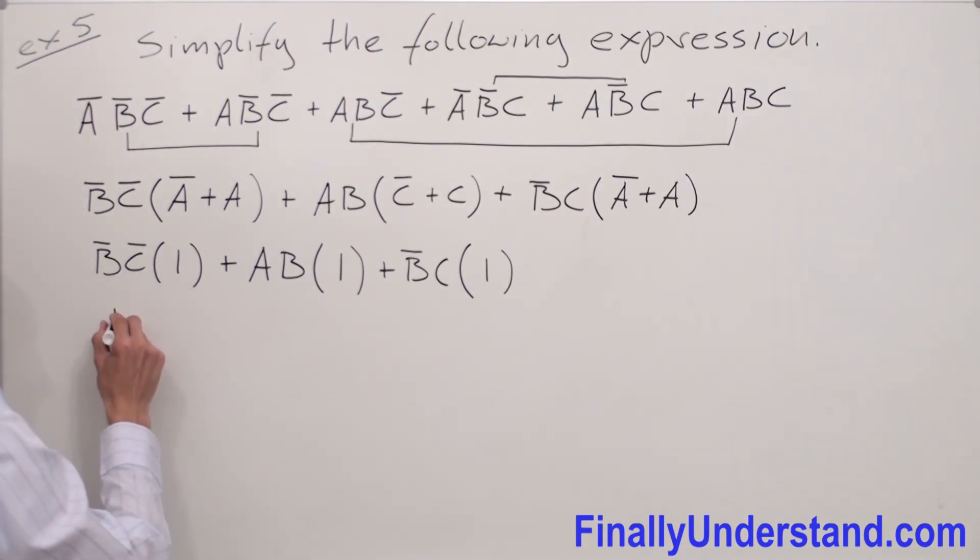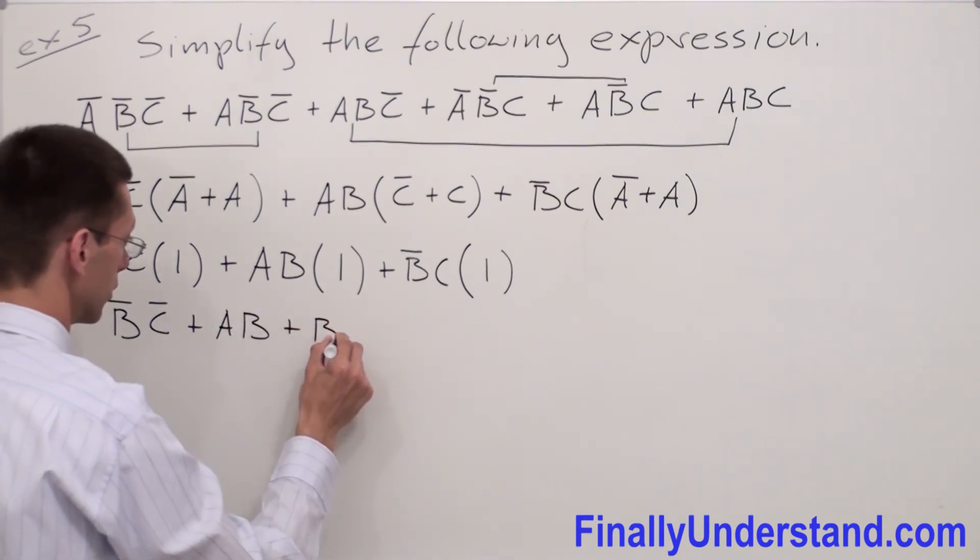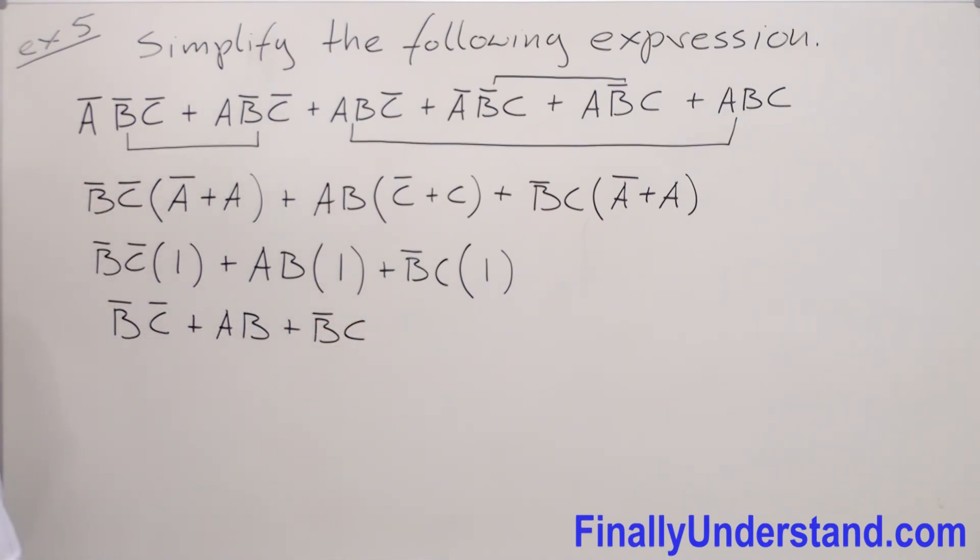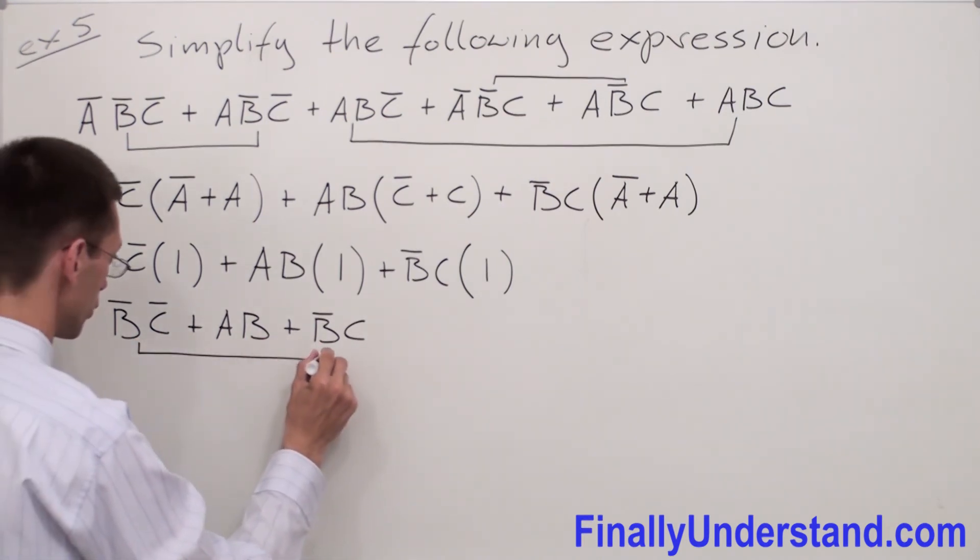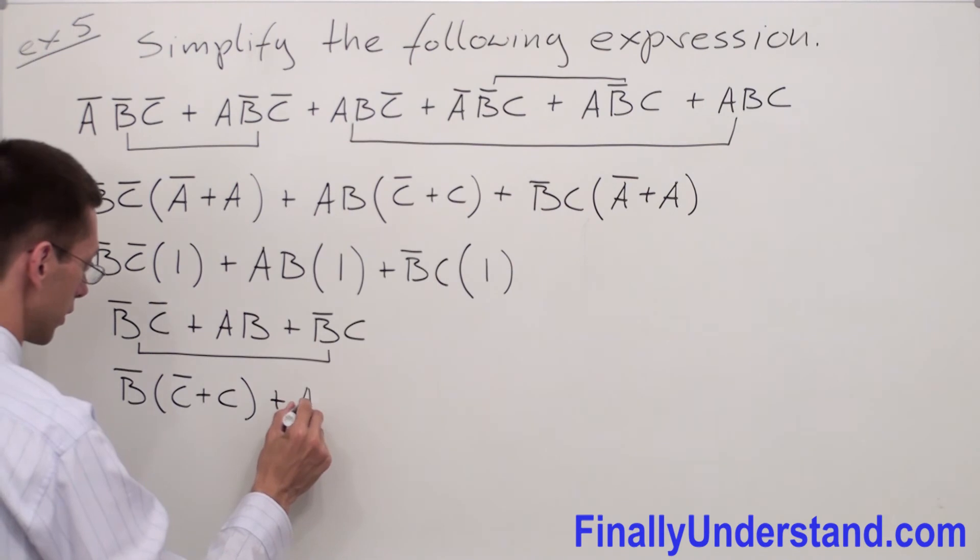And 1 times B̄C̄ will give me B̄C̄ plus, the same story happens over here, AB plus B̄C. Now, let's take a look what we can factorize from these terms. We have B̄ and B̄. I'm going to factorize B̄ from these two terms. And I'm going to end up with B̄ times C̄ or C plus AB.